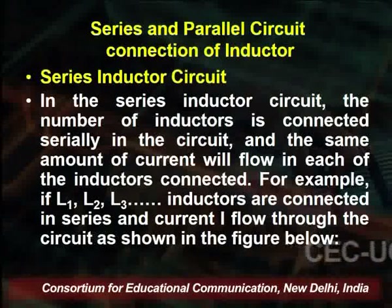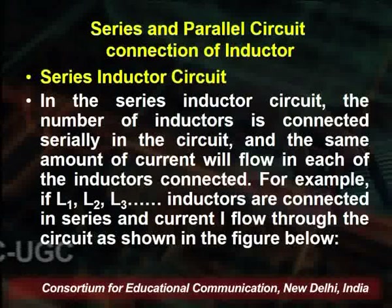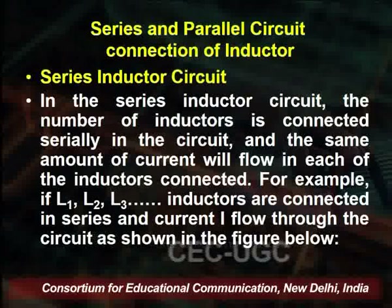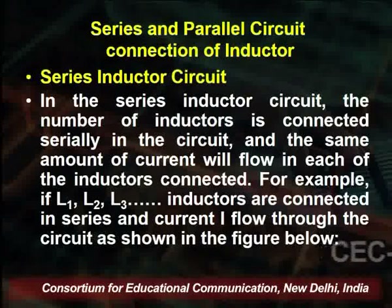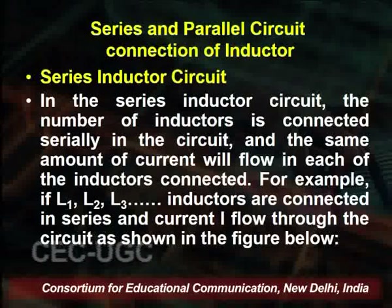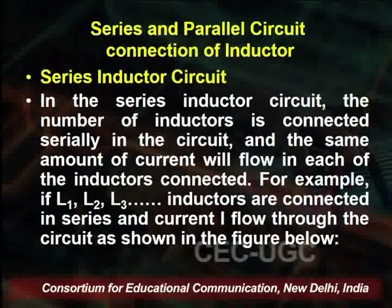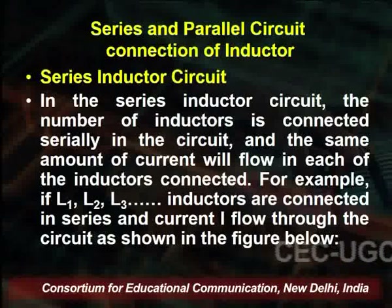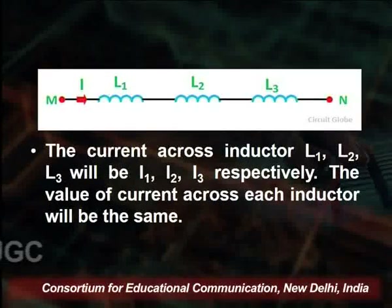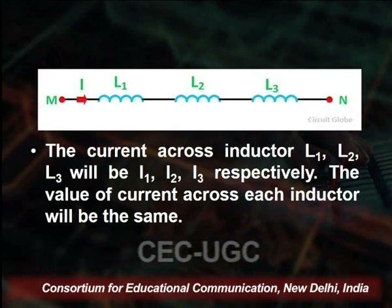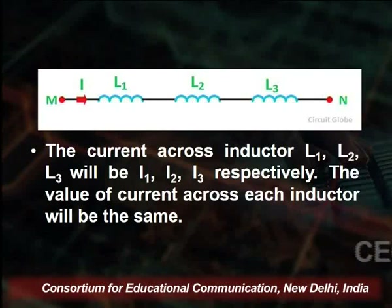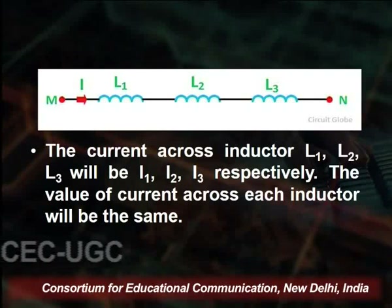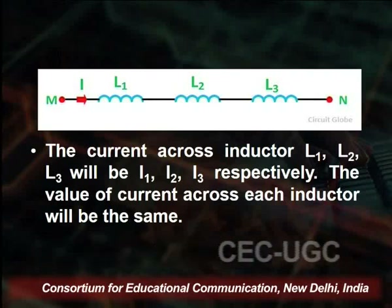In the series inductor circuit, a number of inductors are connected serially in the circuit and the same amount of current flows through each inductor. For example, if we have inductors L1, L2, and L3 connected in series, the current I flows through the circuit. As seen in the figure, L1, L2, and L3 are connected in series with terminals M and N defined. The current across each inductor will be the same, so I_L1 equals I_L2 equals I_N.